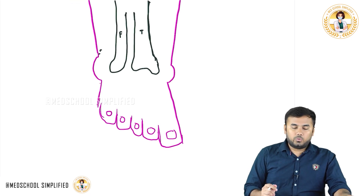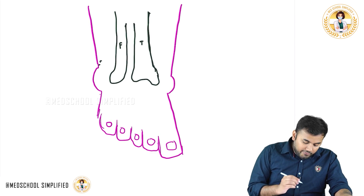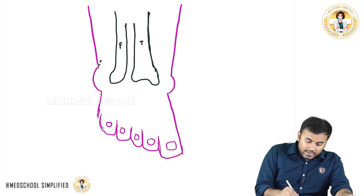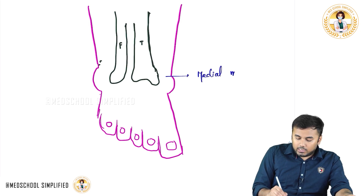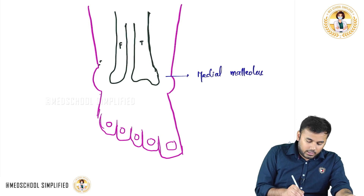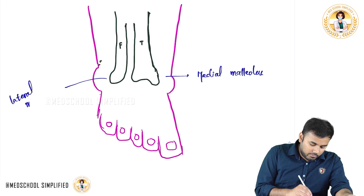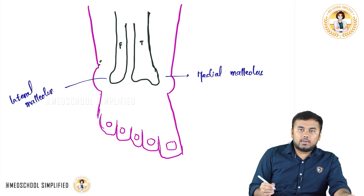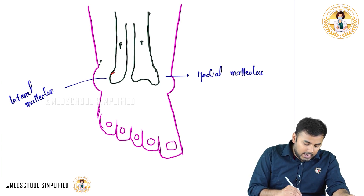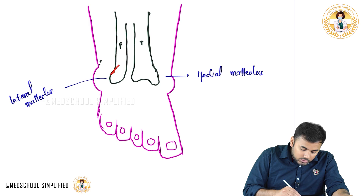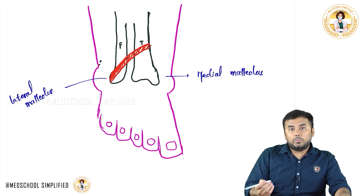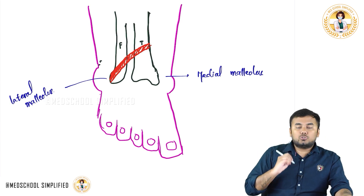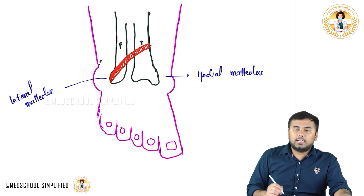This is your foot. Now if you clearly look here, you can find a retinaculum all the way coming from the lateral malleolus. This one over here is your medial malleolus and this one over here is your lateral malleolus. From the lateral malleolus all the way till here you see a retinaculum. This retinaculum is on the top so this is called superior extensor retinaculum.